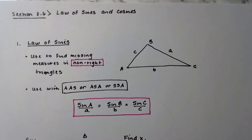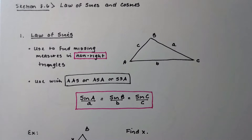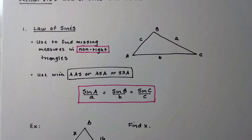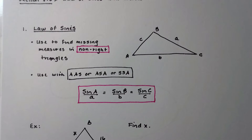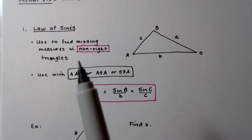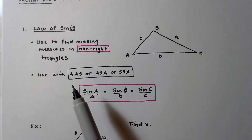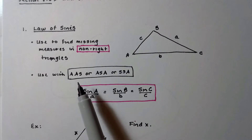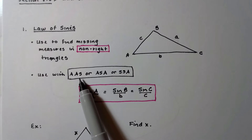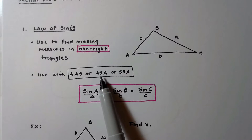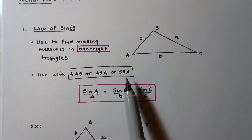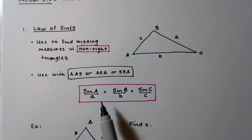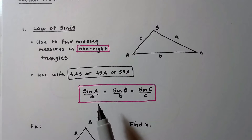The Law of Sines is really easy to use, but you're going to have to remember that we use it on triangles that are not right triangles — so this is when you're dealing with any triangle that's not a right triangle. You use the Law of Sines to find missing measures: missing sides, missing angles. You would use it in situations where you're given two angles and the non-included side, two angles and the included side, or two sides and the non-included angle.